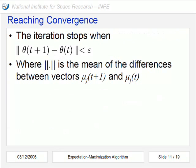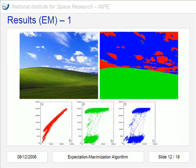One way to say that you reach convergence is when this condition is satisfied. This difference has to be lower than a certain threshold. In this implementation, this difference is the mean of the differences between vectors mean at time t plus one and the mean at time t. Now some results.